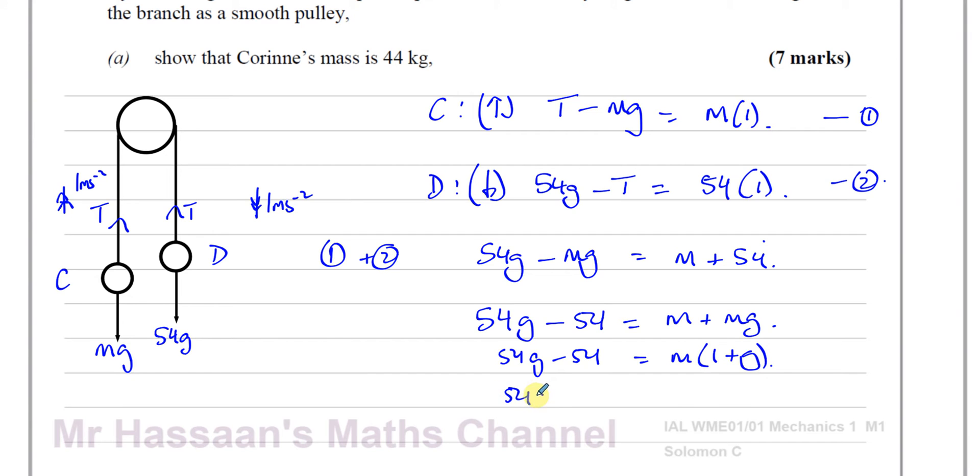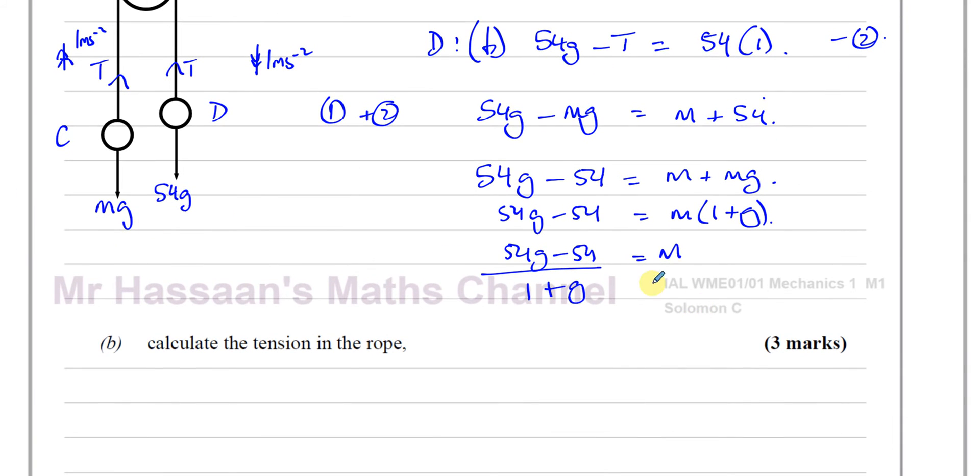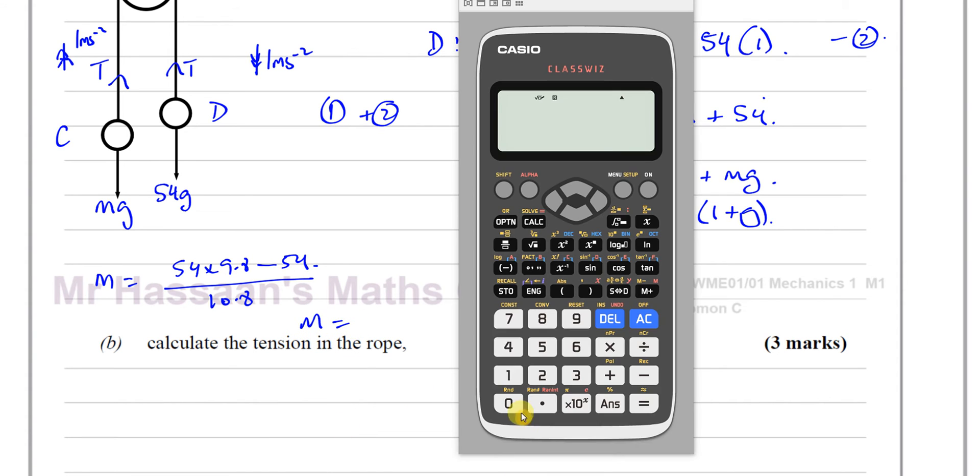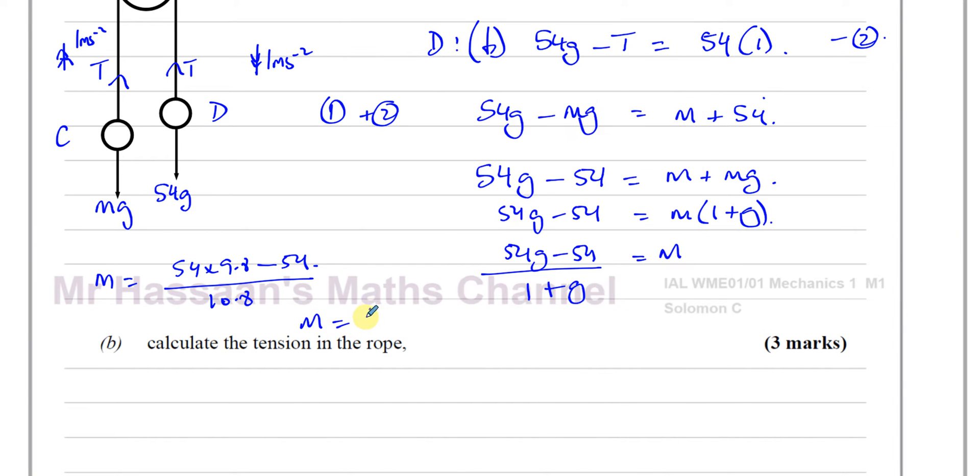So we can say that 54G minus 54 equals M times 1 plus G. And I can divide 54G minus 54 by 1 plus G. And that's going to give me M. And we know G is 9.8. So I can say M is equal to 54 times 9.8 minus 54 over 1 plus 9.8, which is 10.8. M is going to be equal to 54 times 9.8 minus 54 divided by 10.8, which gives us 44 as we have to find.